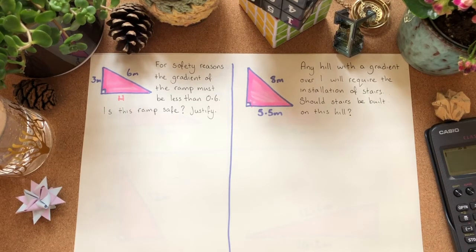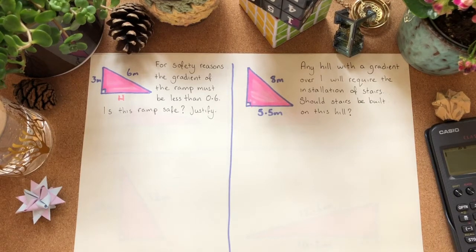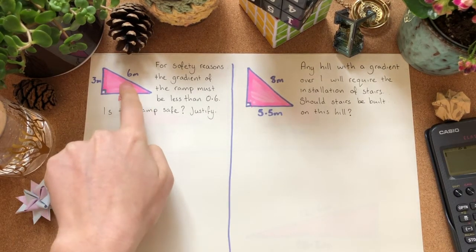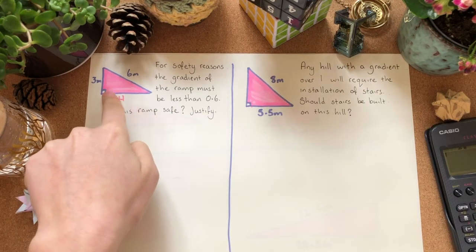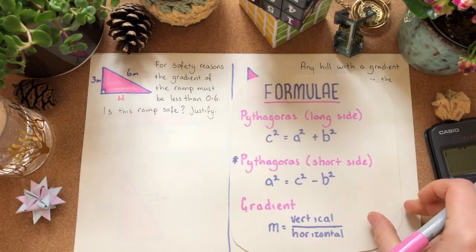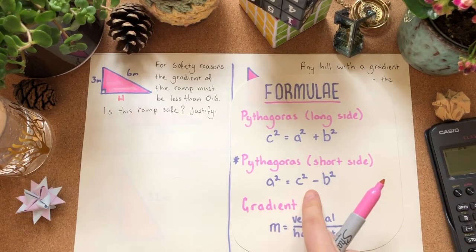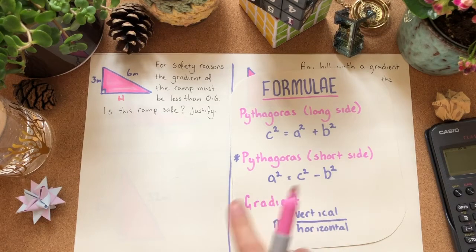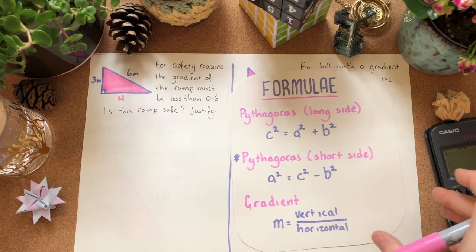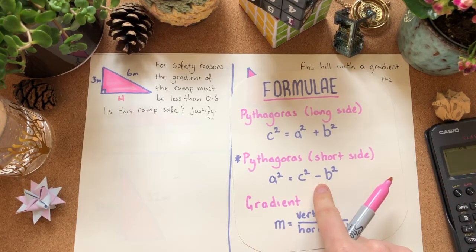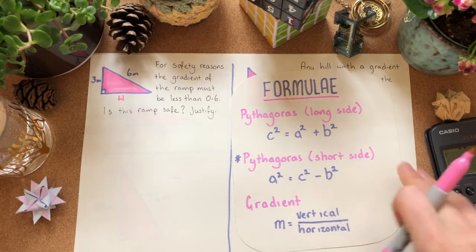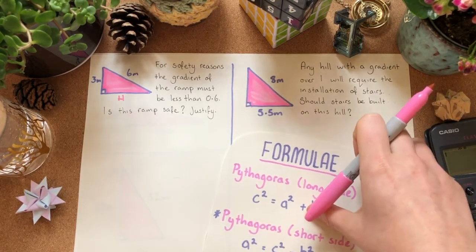The long side is the hypotenuse here. It's the one that's always across from the right angle, never touches the right angle. So, we need to use this formula here. A squared is equal to c squared minus b squared. Doesn't make a difference which way around the letters are, but the important part is that it's a minus for a short side. And this formula will not be on the formula sheet, so you've got to try and remember it.